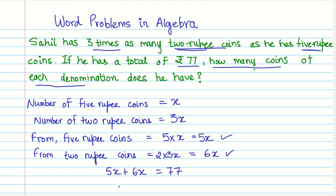And if we simplify this, we get 11x equals 77. Now this is our equation and let us solve this.